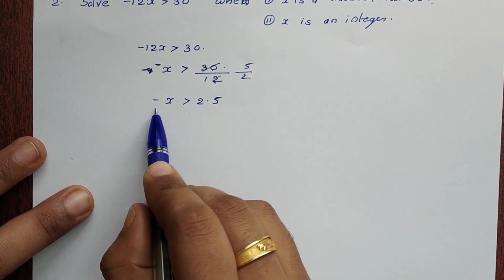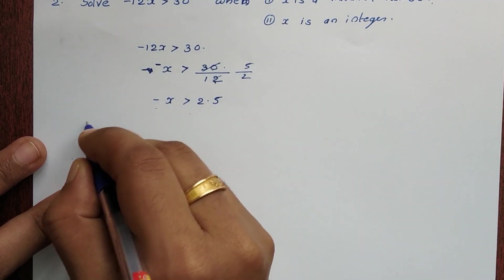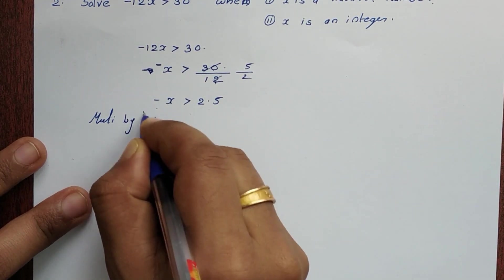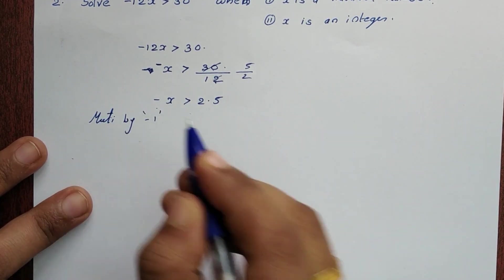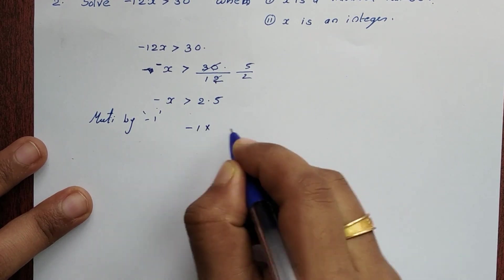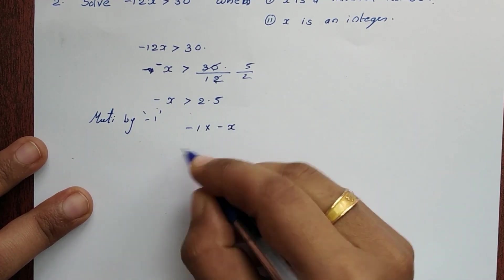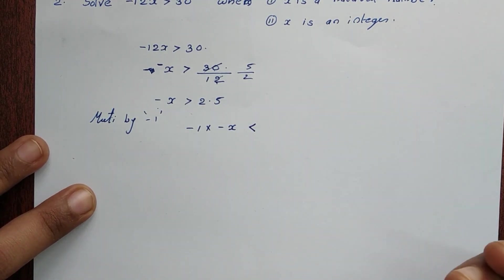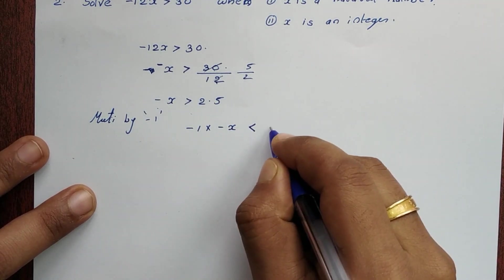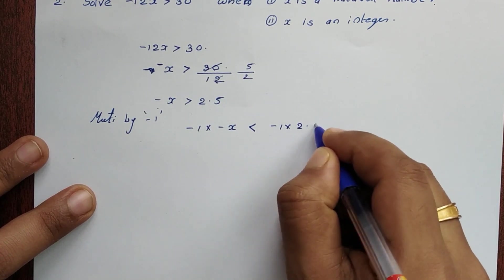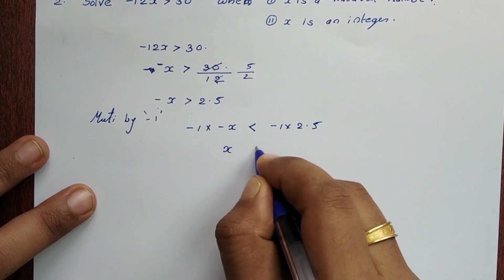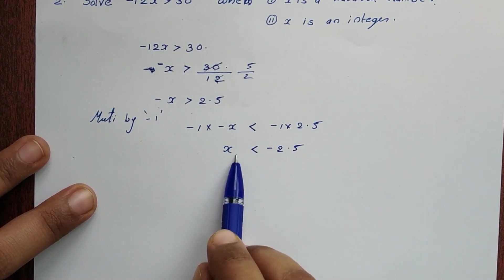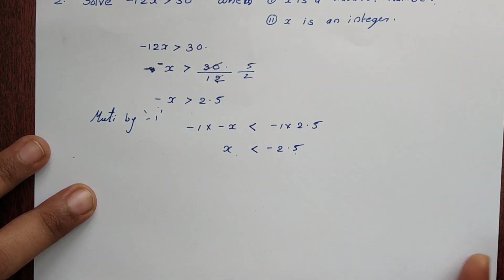Now multiply both sides by -1. When you multiply or divide an inequality by a negative number, the sign of inequality changes. So multiplying -1 into -x and -1 into 2.5 gives us: x < -2.5.